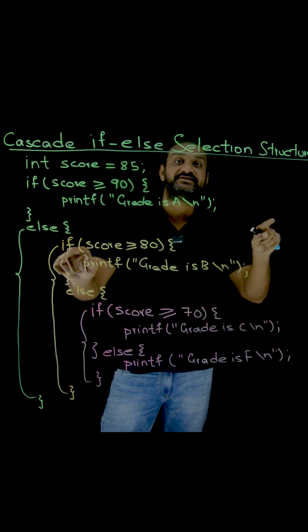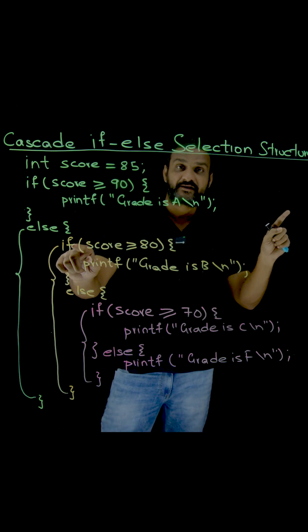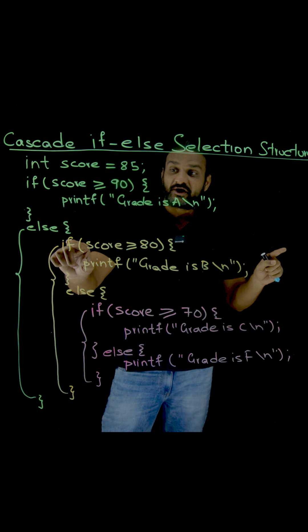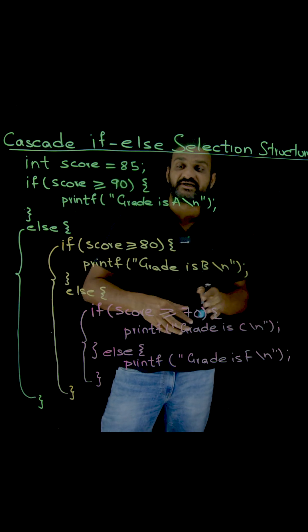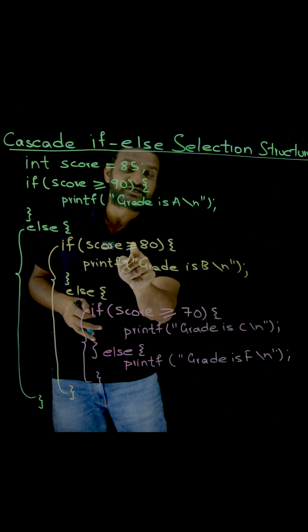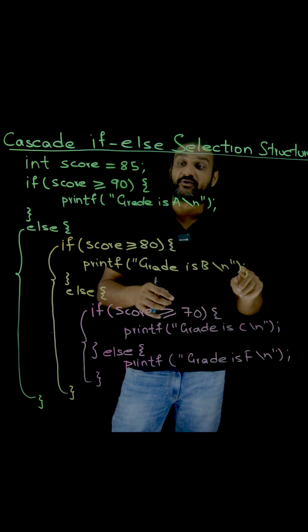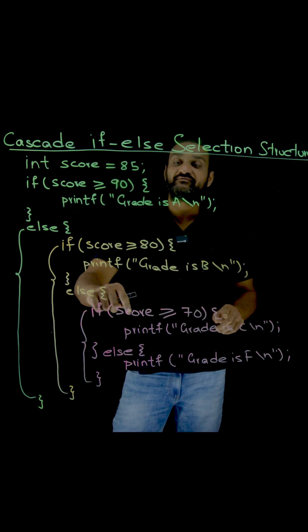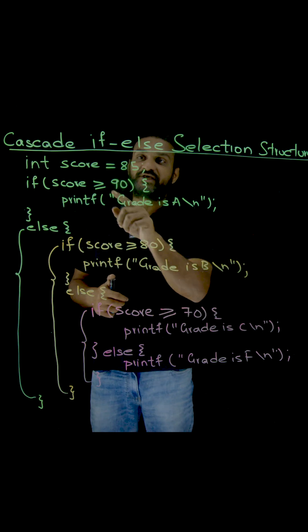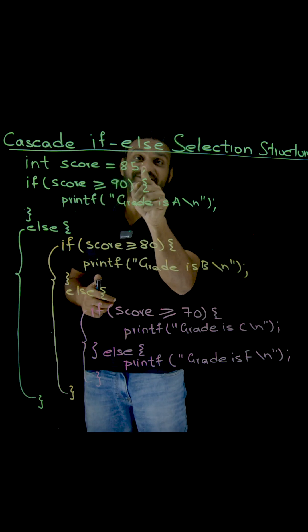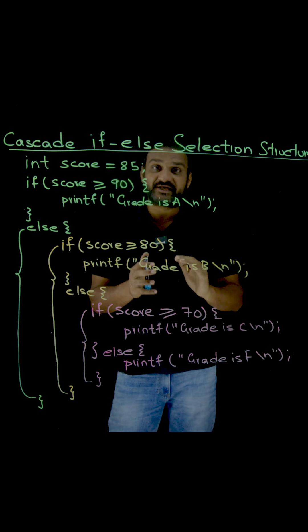Within the else part of this if condition, I have written another if condition. Now what this if is checking for is if the score is greater than or equal to 80. If this is true, we are going to provide the grade as B. So what is the score? The score is 85.